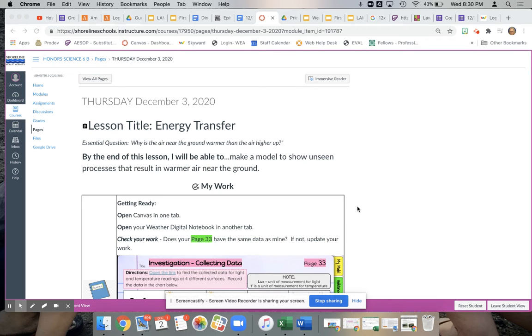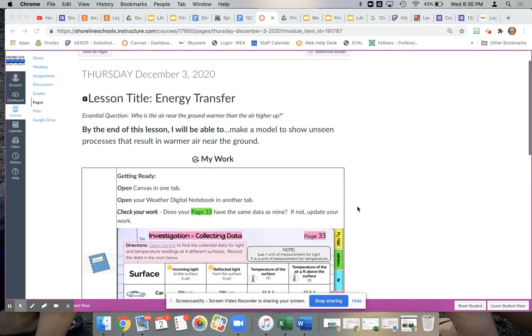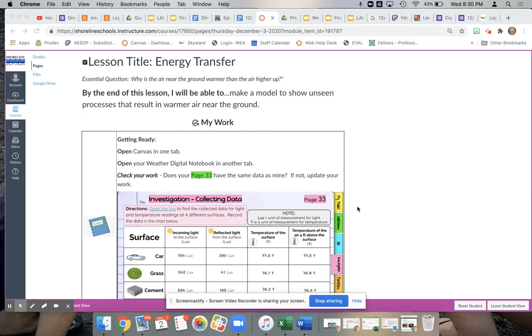Hello, sixth graders. Today, you are going to be thinking about energy transfer and making a model to show how the unseen processes that result in this energy transfer cause the warmer air that we experience near the ground.